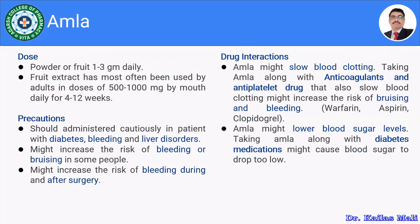Moving towards the dosage of Amla: the seeds of the fruit should be separated, the pulpy part should be ground and dried to obtain a powder. Either the powder or the fruit should be consumed at a dosage of 1 to 3 grams per day. The fruit extract has most often been used at a dosage of 500 to 1000 milligrams by mouth daily, for 4 to 12 days for a particular disease or to obtain certain health benefits. Amla can be used topically as well as orally, and many types of formulations are available in the market.